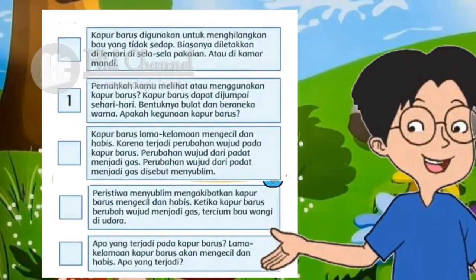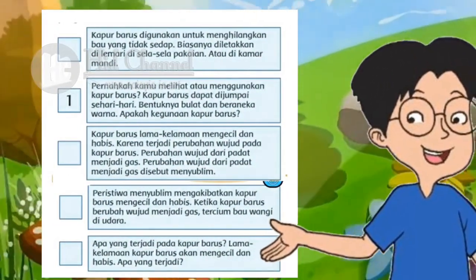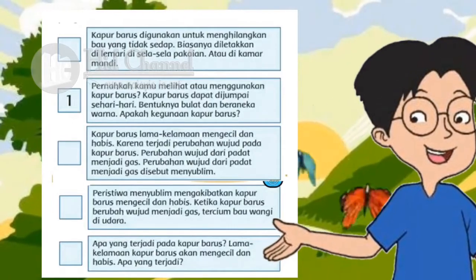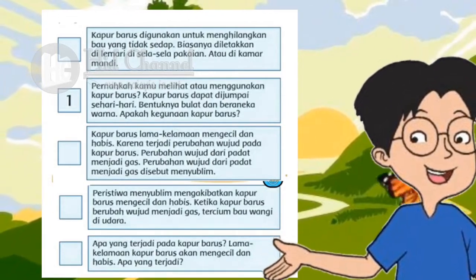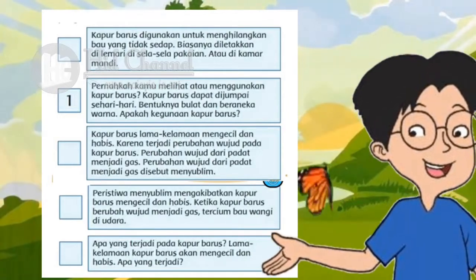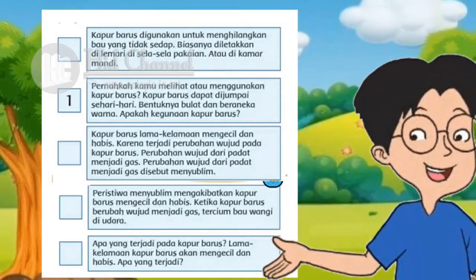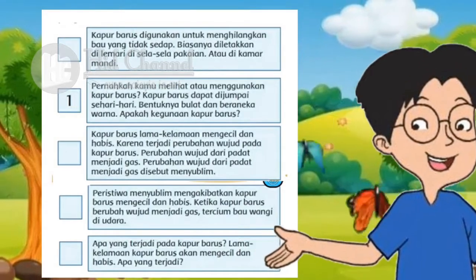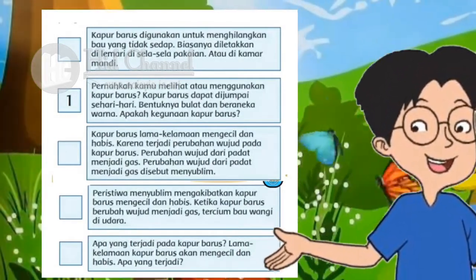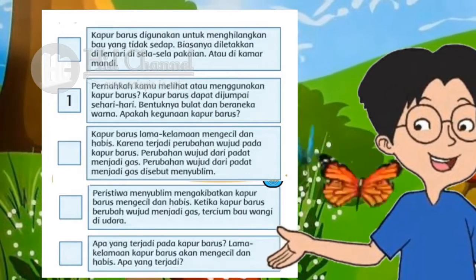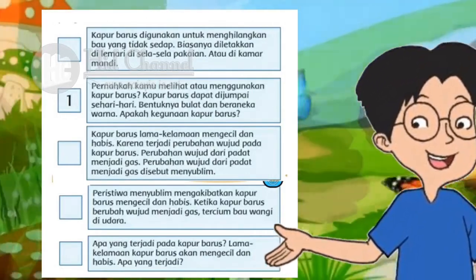Bacalah wacana berikut ini. Baca paragraf demi paragraf. Susunlah paragraf sehingga menjadi cerita yang urut. Nomorilah urutannya di kotak yang disediakan. Pertama kita baca dulu paragrafnya, kita coba cermati. Setelah itu, kita coba urutkan paragraf demi paragraf sehingga membentuk suatu cerita yang urut.